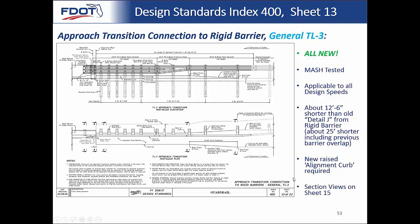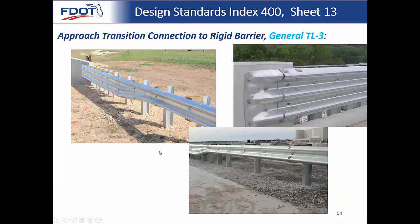The section views for this are on Sheet 15, where all sections help define the curb and guardrail offsets. Pictures pulled from crash test reports give multiple angles of the system. The alignment curb here is not exactly what ours would be, but similar. The terminal overlap doesn't go the full 12 foot 6 inches past the barrier as old Detail J would — it just connects right here with the Thribeam terminal connector and that's it.